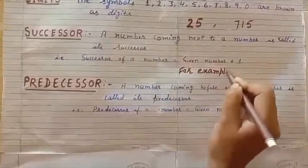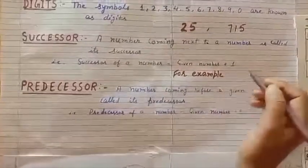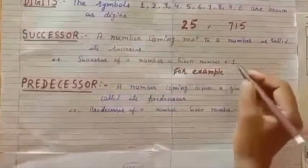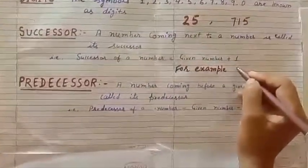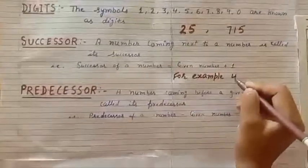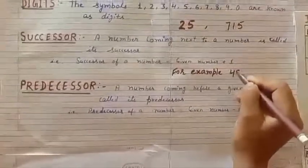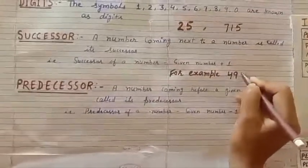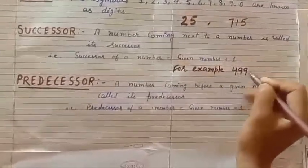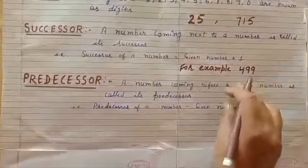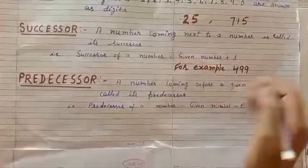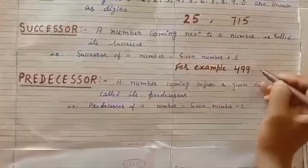For example, let's take the number four hundred ninety-nine. What is the successor of four hundred ninety-nine? The successor is four hundred ninety-nine plus one, which equals five hundred.